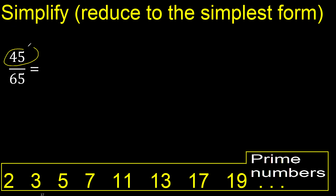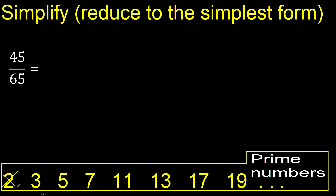Can 45 and 65 be divided by 2? No, because the last digit is not even. Cannot be divided by 3 because 65 cannot be divided by 3 — 6 plus 5 is 11, and 11 cannot be divided by 3.